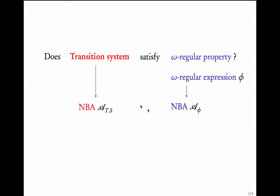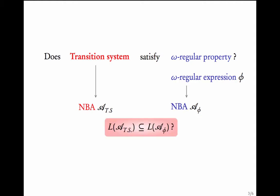Moreover, we know how to convert transition systems into automata — we have seen this when talking about model checking regular safety properties. We took a transition system with atomic propositions as labels on states and passed these labels onto each of the outgoing transitions. In this case the resulting system is seen as a non-deterministic Büchi automaton. So you have a Büchi automaton for the transition system and a Büchi automaton for the property.